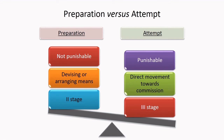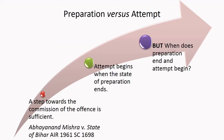Now let us find out the difference between Preparation and Attempt. Preparation is the second stage of crime commission, while Attempt is the third stage. Preparation means devising or arranging means necessary for the commission of the particular crime, whereas Attempt is the direct movement towards the commission of the crime — the stage very prior to the actual commission. Preparation is generally not punishable, whereas Attempt is always punishable. The real problem lies in finding out exactly where the attempt begins or where exactly the preparation ends.